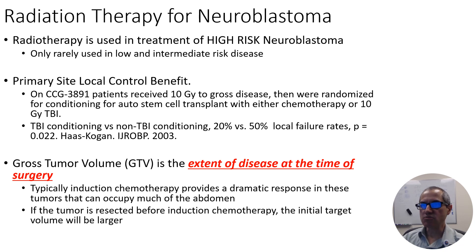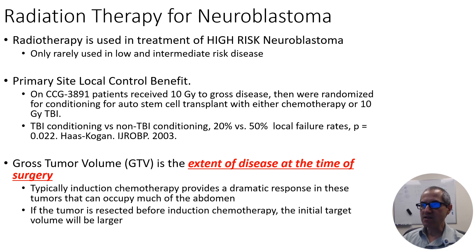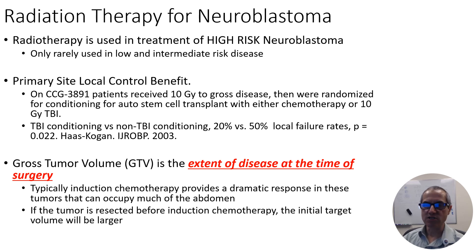As radiation oncologists, we really only treat high-risk neuroblastoma patients. Only rarely do we treat patients with low or intermediate risk disease, and so that's my focus. I should further add that the focus of this talk in terms of radiation therapy is on the treatment algorithm I just showed. Patients who have recurrent disease or are in other situations are treated somewhat differently, including different doses, and I'll try to highlight that as I continue.